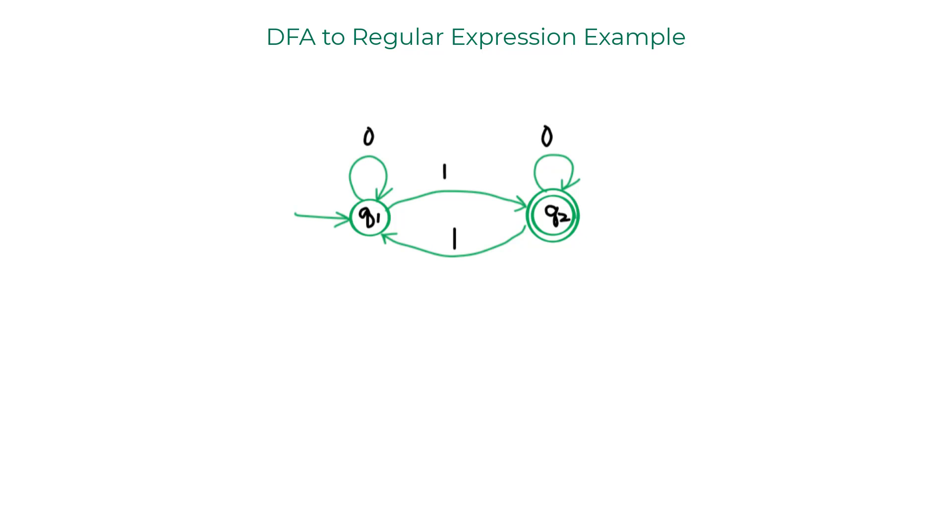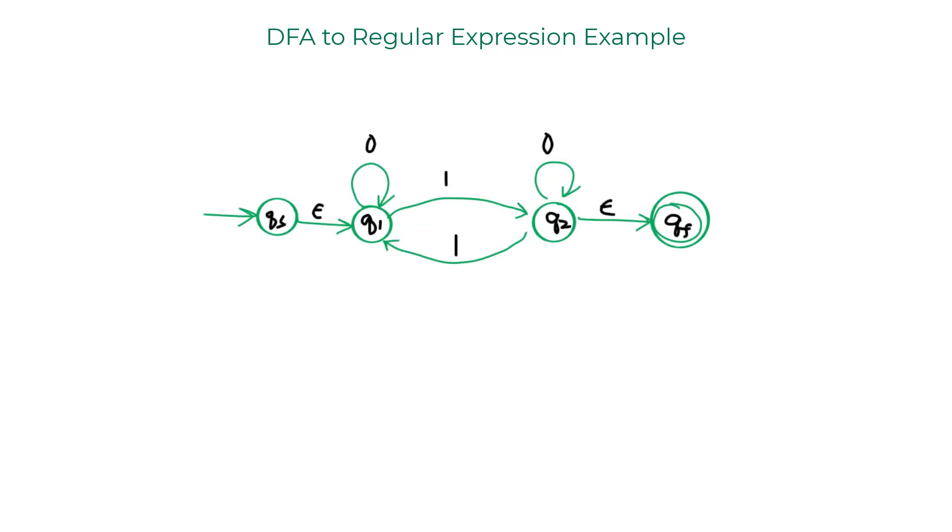I'll show you an example of this conversion using this DFA. To convert this DFA into a GNFA, you have to add a start state and a final accept state. So this is the standard. So if your DFA has two states, the GNFA will have four states. If your DFA has five states, your GNFA will have seven states because you're adding this extra start state and the accept state.